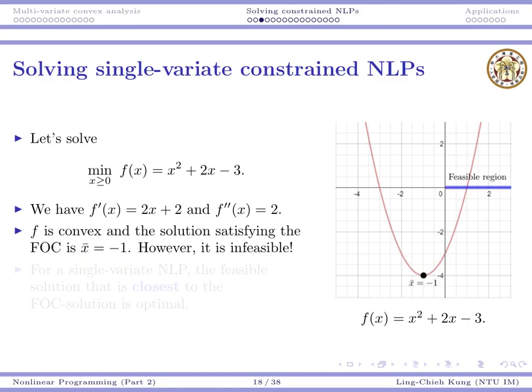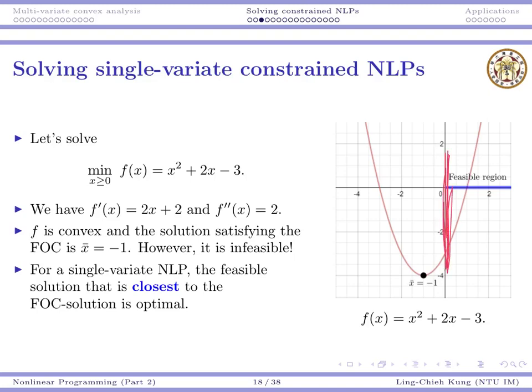In this case, we actually know how to do it. All we need to do is to, in the feasible region, find a point that is closest to the first order condition solution. In this case, we know the closest point will be this point. The optimal solution will be for x to be 0. This is the optimal solution within the feasible region. Why do we know we only need to find the closest point to the first order condition point?